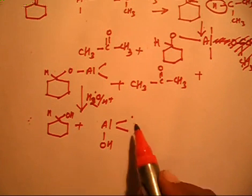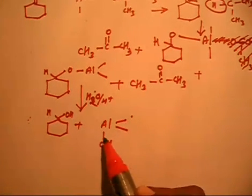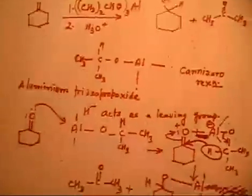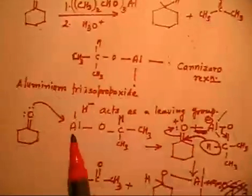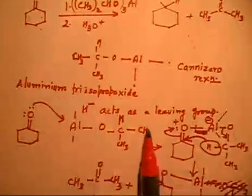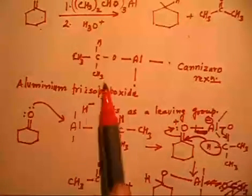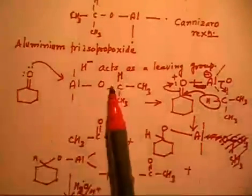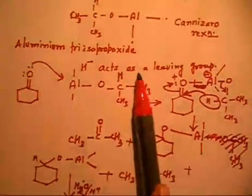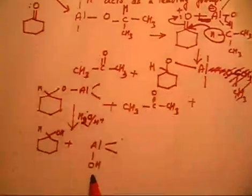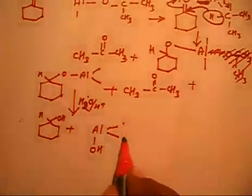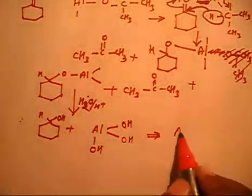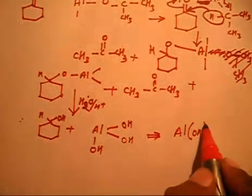Because all three isopropoxide groups on aluminum are identical, whatever happens in the first step — removing one isopropoxide group and getting one OH — happens three times. So finally we get Al(OH)3 as the aluminum product.